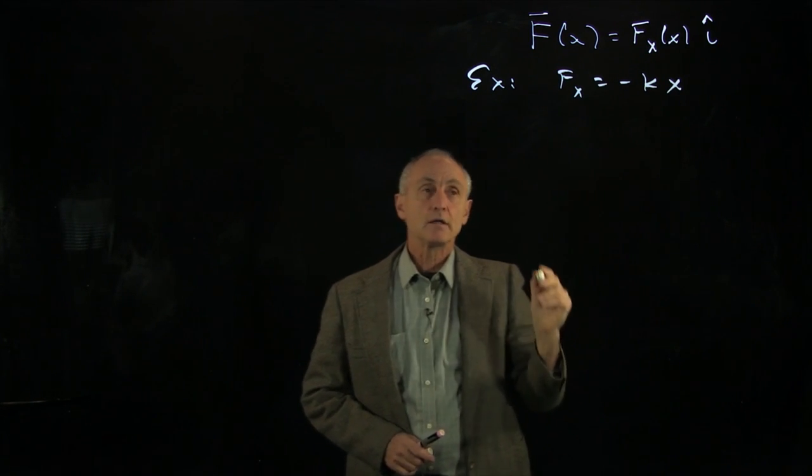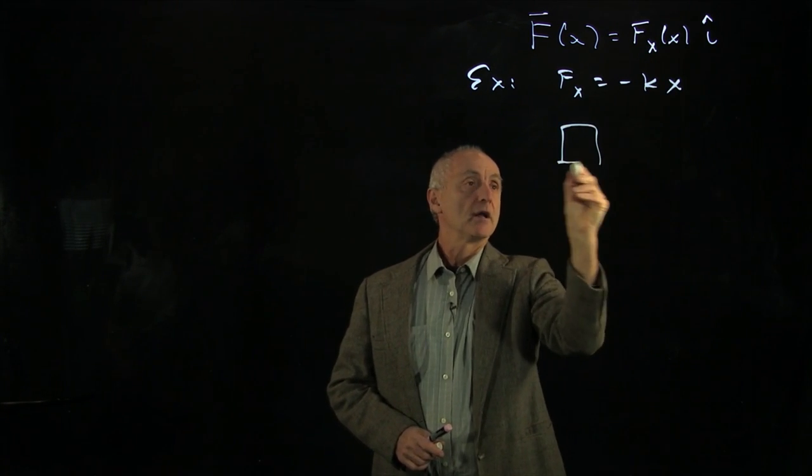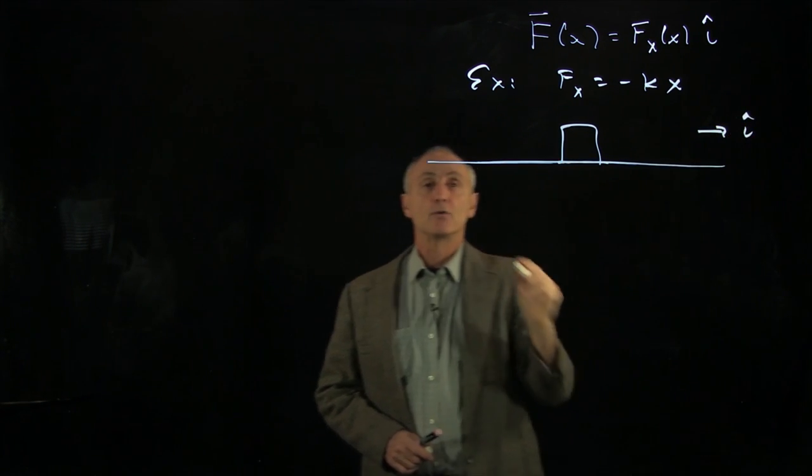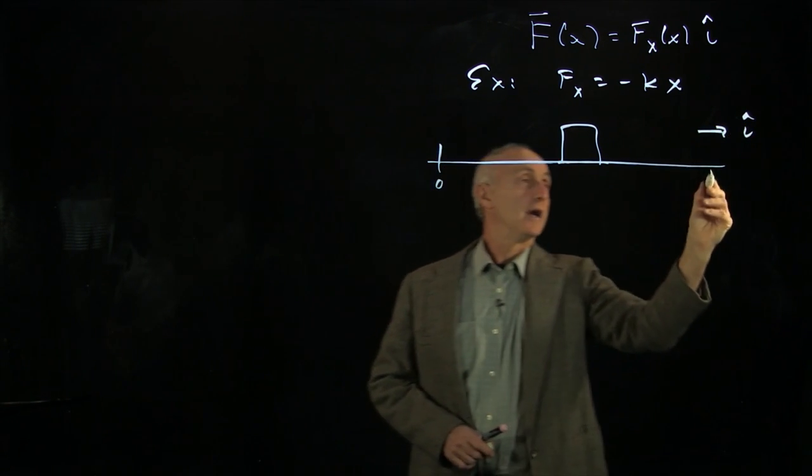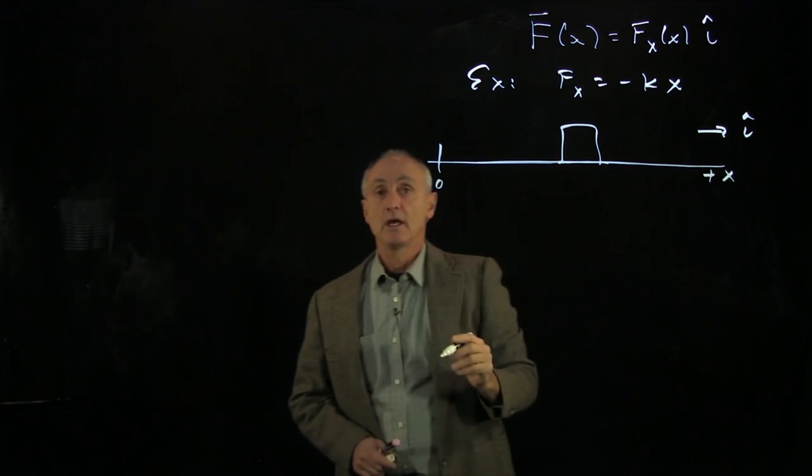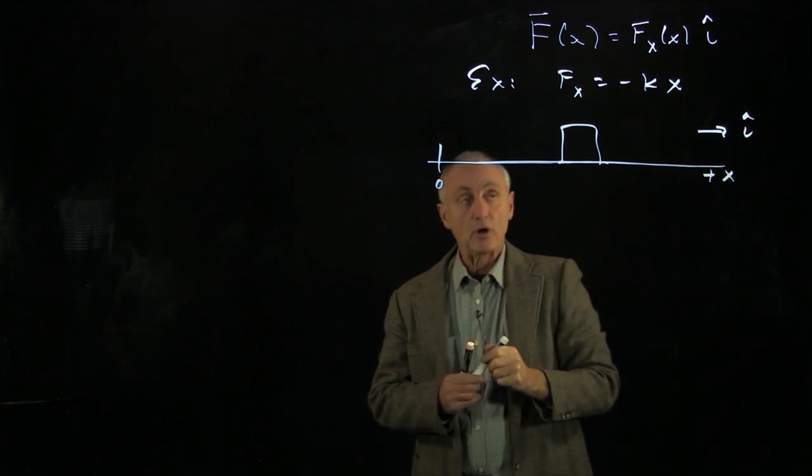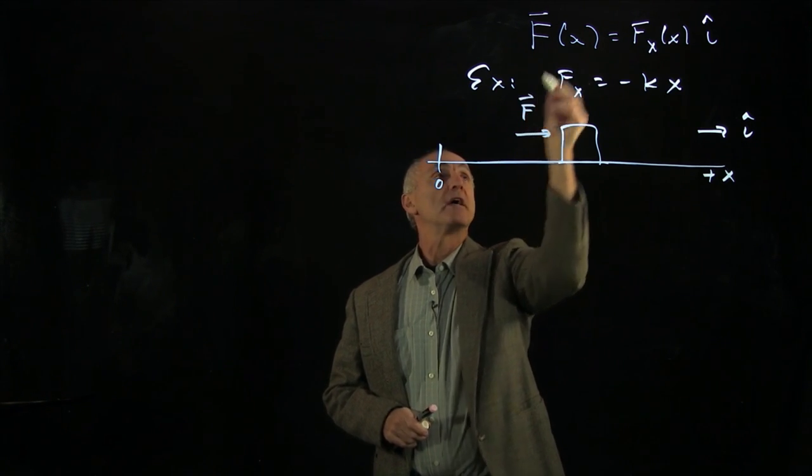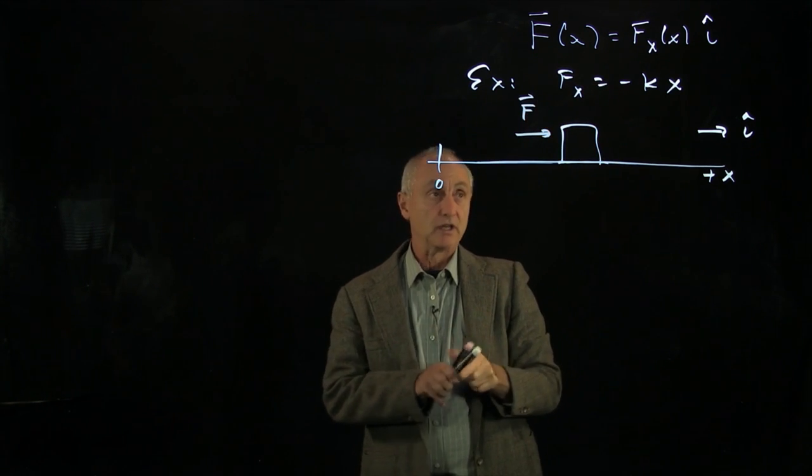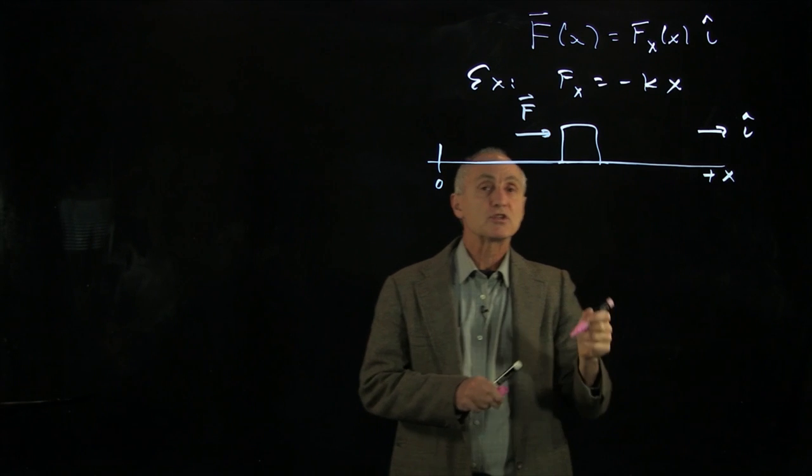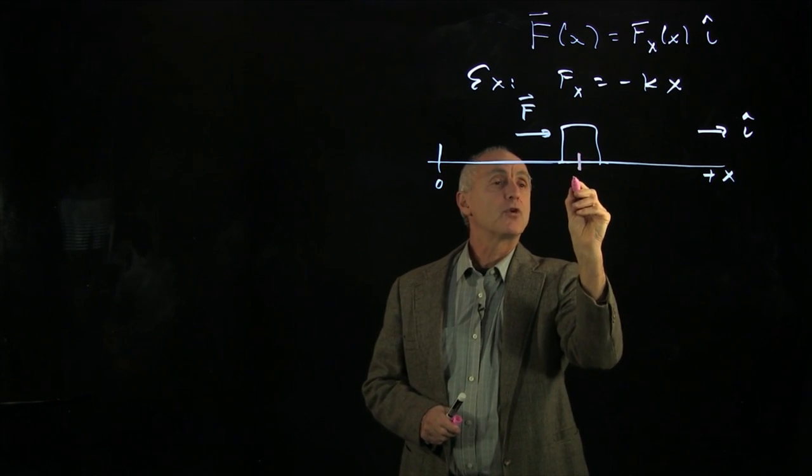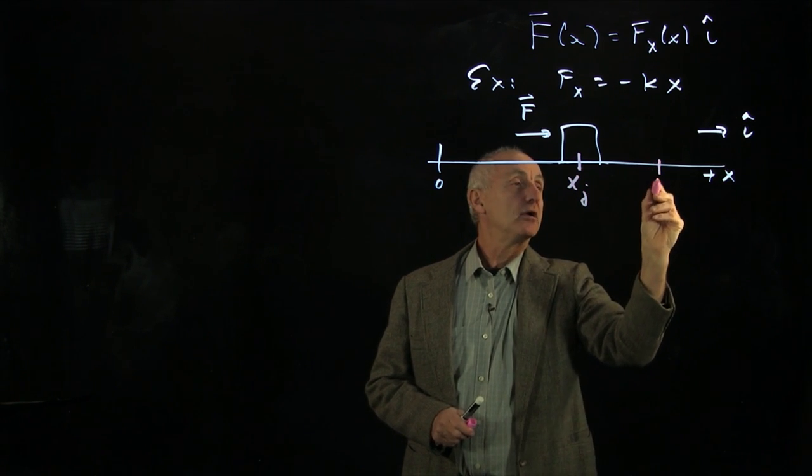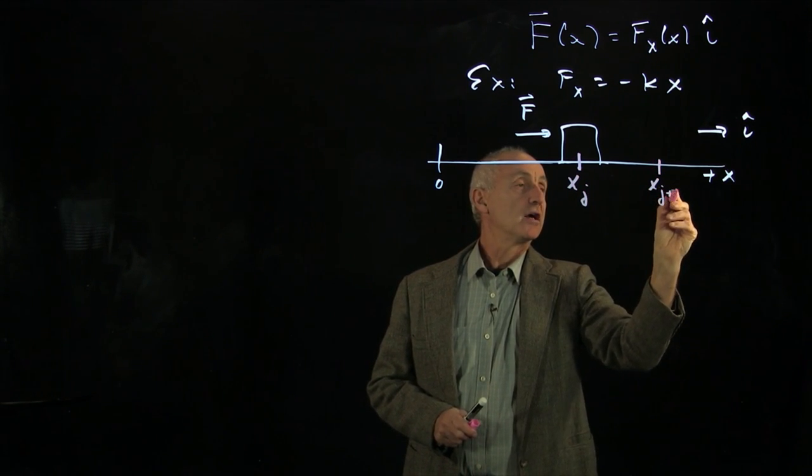When we apply this force to our object, the i-hat direction will have an origin, and this is our plus x-coordinate system. Because the force is a function of position, we want to look at the displacement over a small amount. Let's call this the point x_j, and out here, let's refer to this as x_{j+1}.